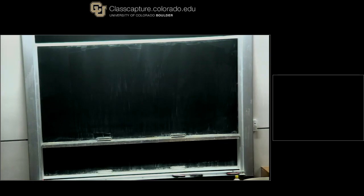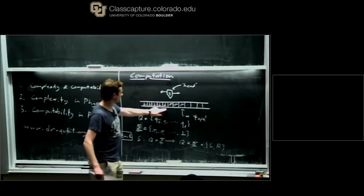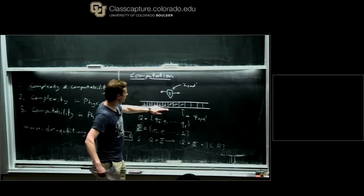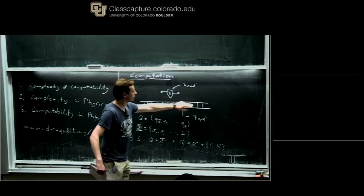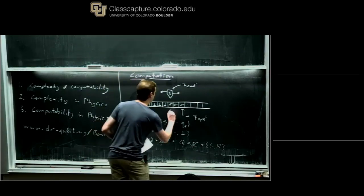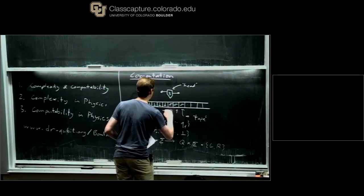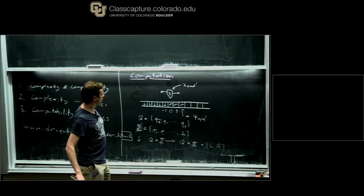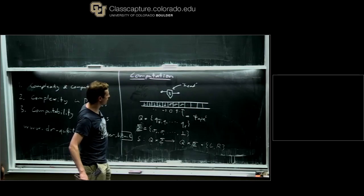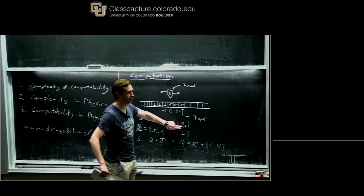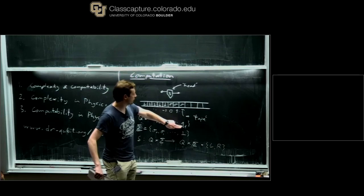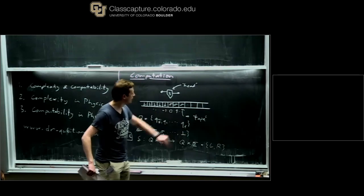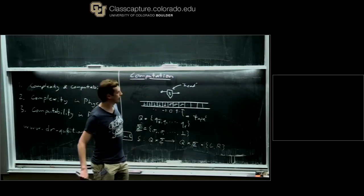We need some convention about how we start this computation. The tape is entirely blank — filled with the blank symbol — except that the input to this computation is just some finite string of symbols, starting at cell zero. The output of this computation: the Turing machine runs until it enters some special internal state Qf for final, a halting state, and then it stops. The output of the computation is whatever is left written on the tape.